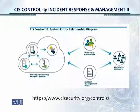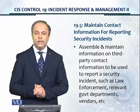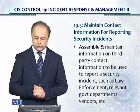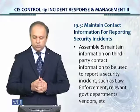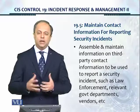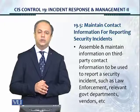This is the system entity relationship diagram. There are third-party authorities and incident management plans and mechanisms which we will work with or enforce on the workforce members. Control No. 19.5: Maintain Contact Information for Reporting Security Incidents. Assemble and maintain information on third-party contact information to be used to report a security incident, such as contact information of law enforcement, relevant government departments, vendors, et cetera.